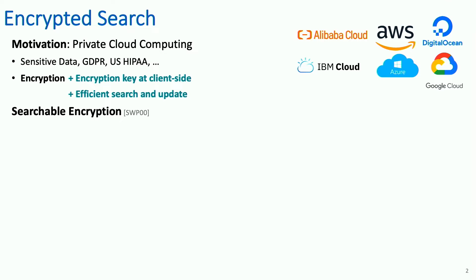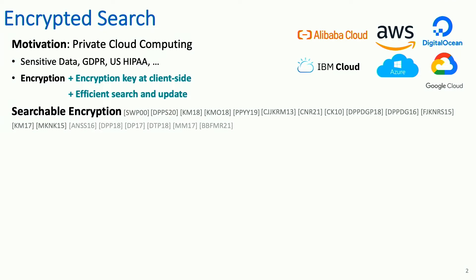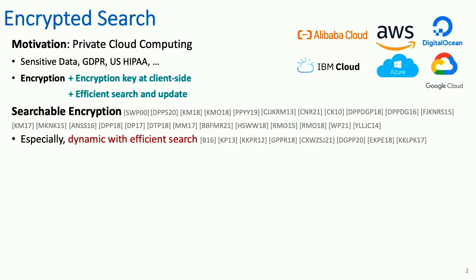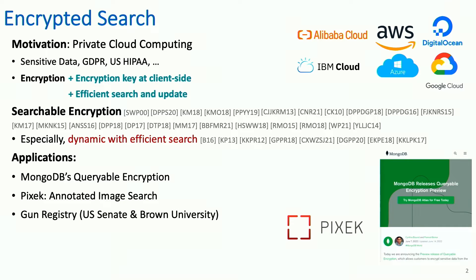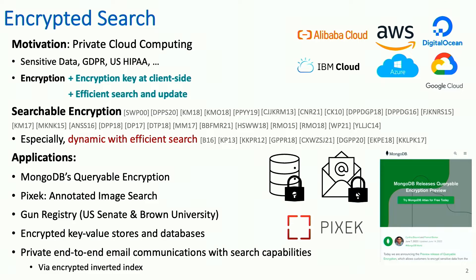Searchable encryption was first introduced by Song in the year 2000. It has received a lot of attention in many areas, but the part I want to focus on here is dynamic searchable encryption, which basically means you want to have efficient search while you can update your data set. It has a lot of applications. Recently, it was added to MongoDB as their queryable encryption feature. You can use it for annotated image search, it was proposed for gun registry, and the generic basic thing you can make with searchable encryption boils down to an encrypted key-value store and therefore databases. The classic example ends up being encrypted inverted indexes, for example for emails or documents.